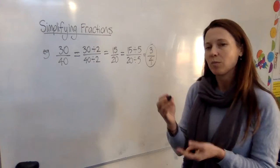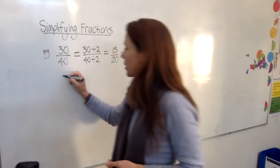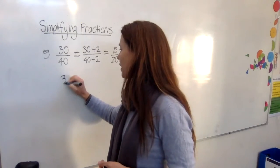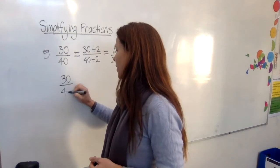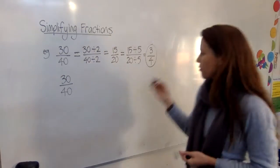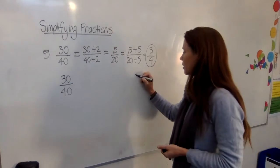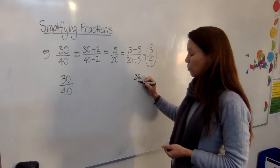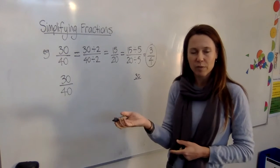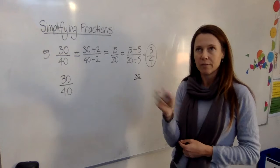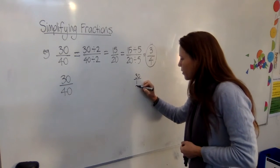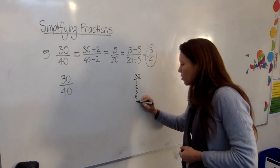Is there a quicker way? Yes and no. It could be quicker if you can spot the highest common factor that they both share. Now, let's think of all the factors of 30. 30 has got one and 30, two and 15, three and 10, five and six. So if we write all of those down in order of size...